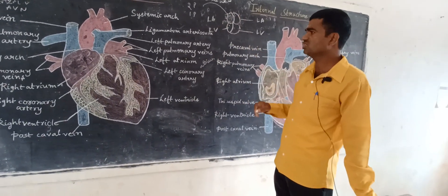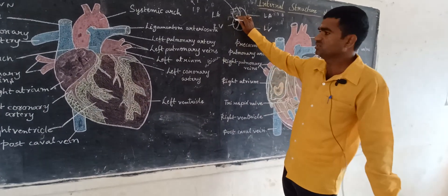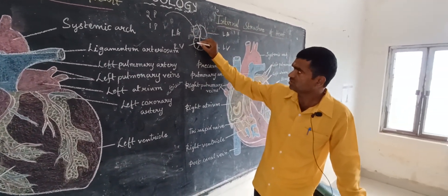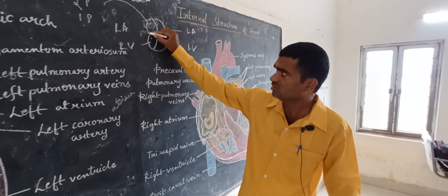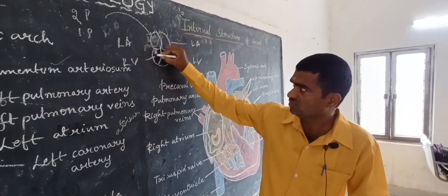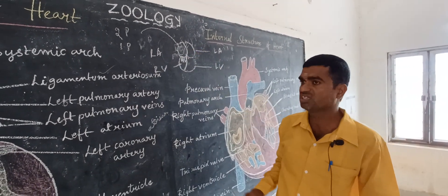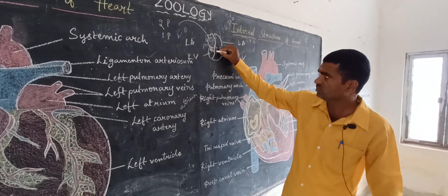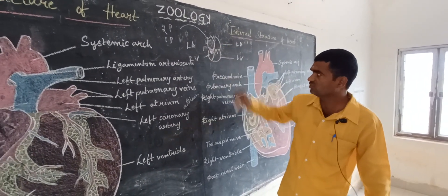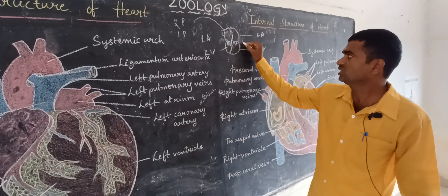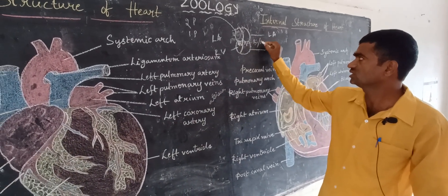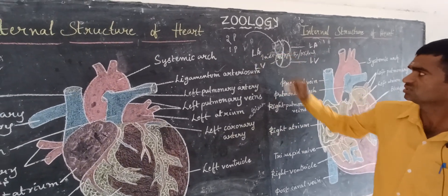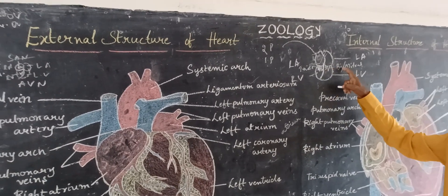The right atrium pumps blood into the right ventricle; it contains tricuspid valves. From the left atrium, blood is pumped into the left ventricle through bicuspid valves, also called mitral valves. So tricuspid valves and bicuspid valves are present. The tricuspid valve is present on the right side, and the bicuspid valve is present on the left side.